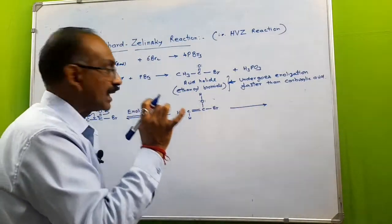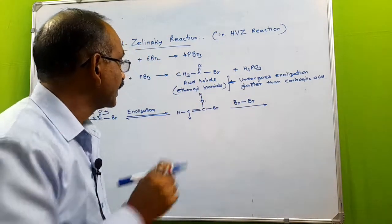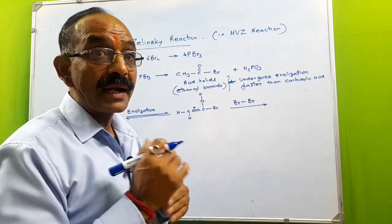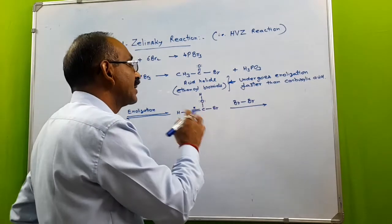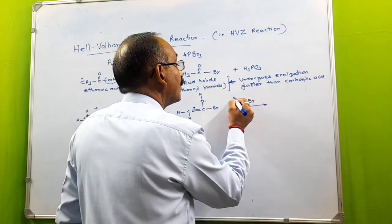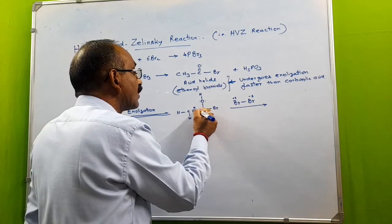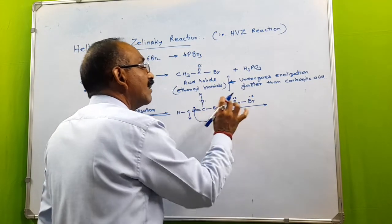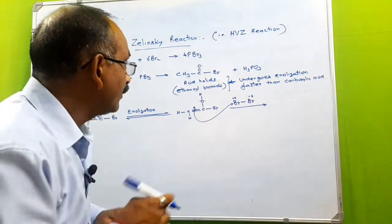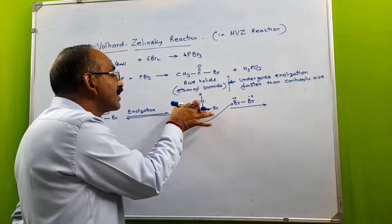This enol form of the acid halide then attacks the bromine molecule. There is a carbon-carbon double bond — a pi bond — present, making it similar to an alkene, so it undergoes electrophilic addition. The pi bond or delocalized electrons cause polarization in the bromine molecule: one bromine gets a partial positive charge and the other a partial negative charge. The pi electrons attack the positive terminal of bromine.